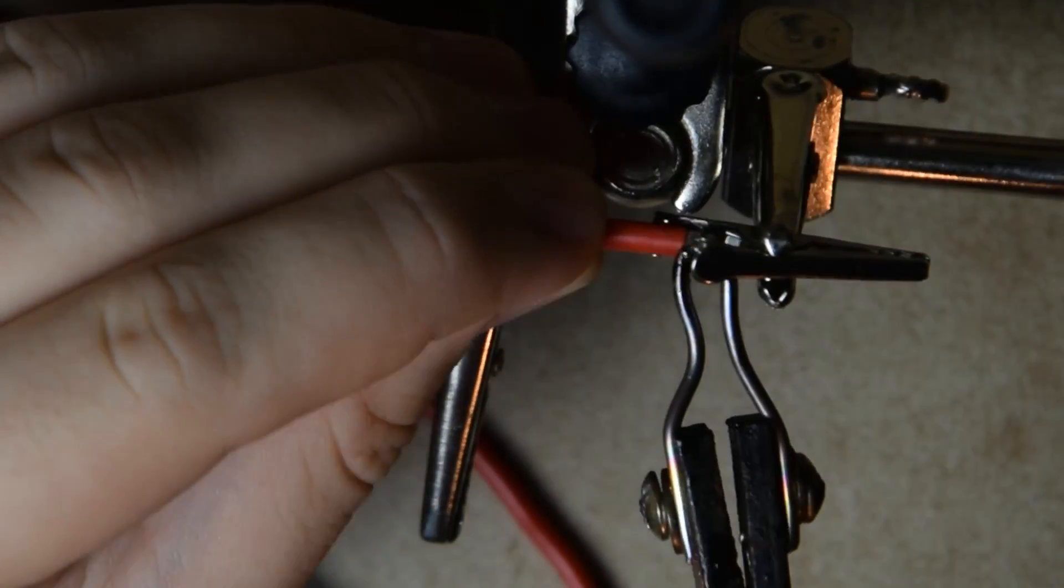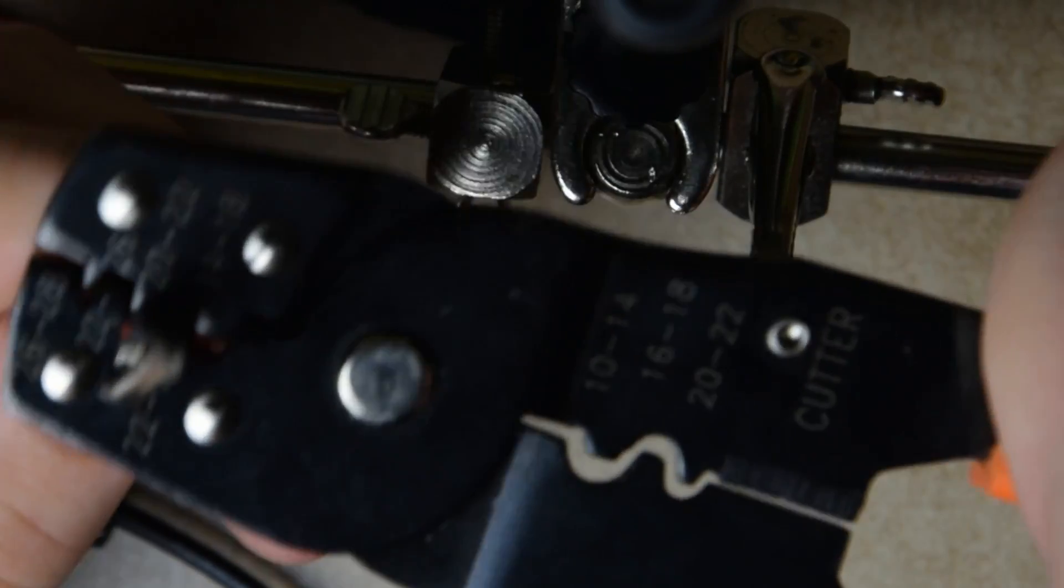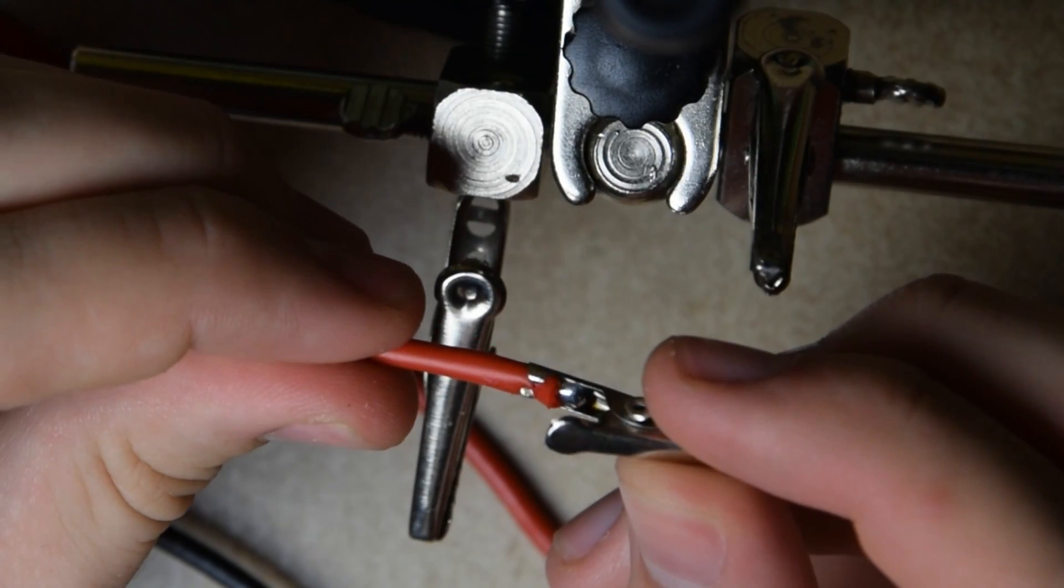With that done we can solder in the other ends of the wires and crimp them to create a good electrical and mechanical connection.